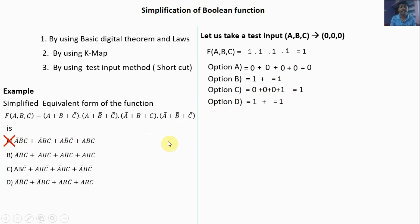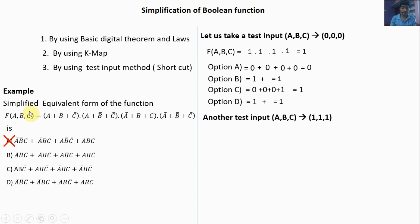From that we can judge that option A is wrong. So let us take another test input — it may be 0, 0, 1 or 0, 1, 0. Now I will select the input as 1, 1, 1. Substitute in the function. A is 1, total term will be 1. A is 1, total term will be 1. B is 1, total term will be 1. A bar 0, B bar 0, C bar 0 — so 0. In multiplication, any one of the inputs is 0, the total output will be 0.